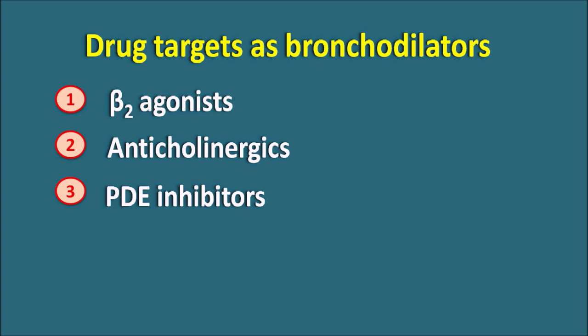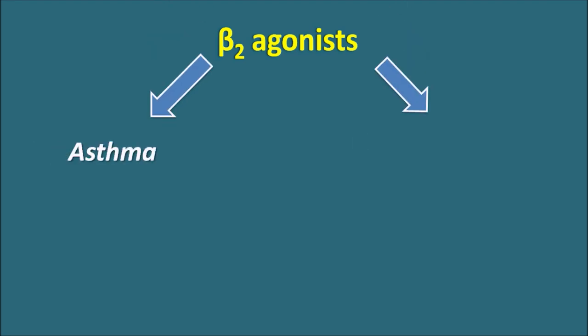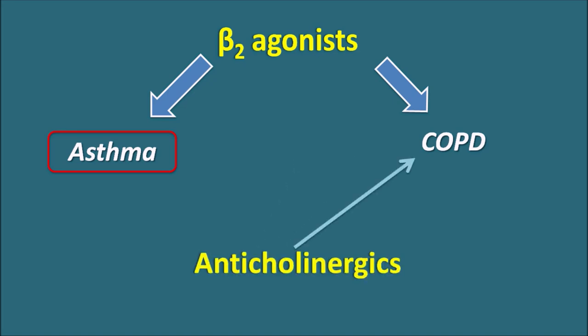Beta-2 agonists can be used in the treatment of asthma and also COPD. However, since COPD mainly results in loss of bronchial smooth muscle, beta-2 agonists are mainly used for symptomatic relief in COPD and are primarily preferred for asthma. On the other hand, anticholinergics show greater efficacy towards COPD. So although both are bronchodilators, they have different clinical uses.